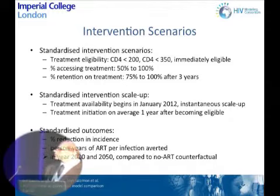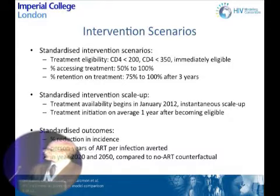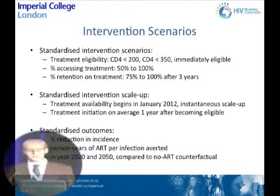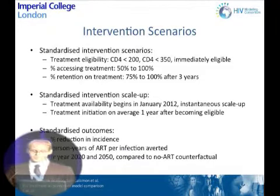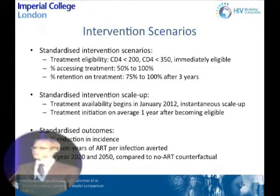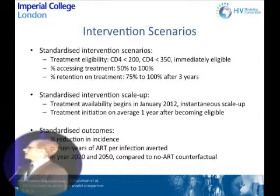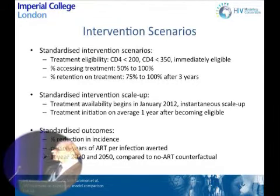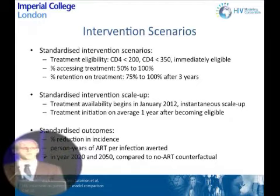The intervention scenarios systematically varied the CD4 count threshold for treatment eligibility, the percentage of the HIV-infected population with access to treatment, and the percentage of those who start treatment who are retained on treatment after three years. The models also standardized the scale-up of the intervention: treatment availability was assumed to begin in January 2012 with an instantaneous program scale-up, and treatment initiation was assumed to occur on average one year after becoming eligible for the relevant CD4 count threshold.